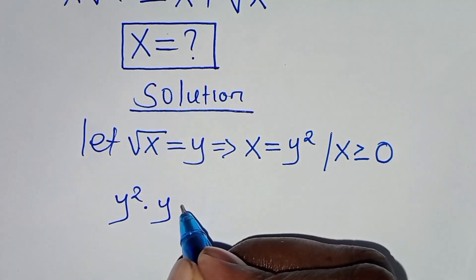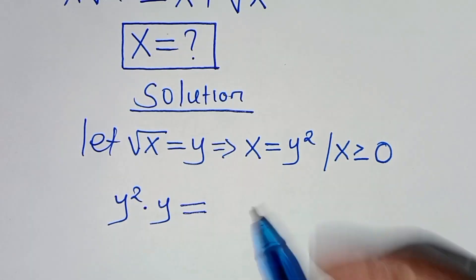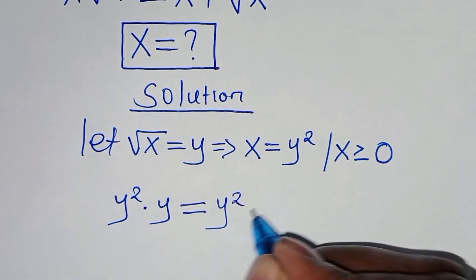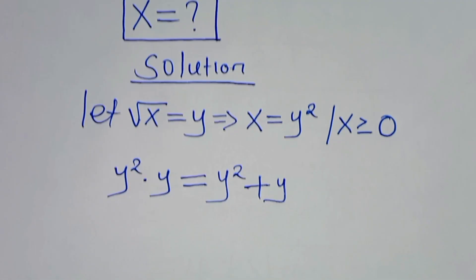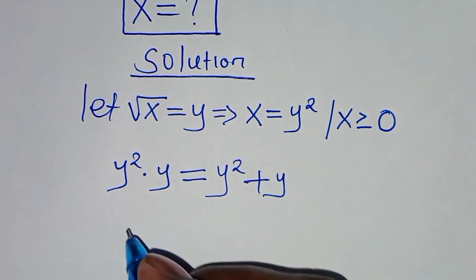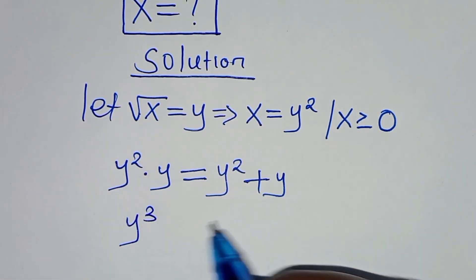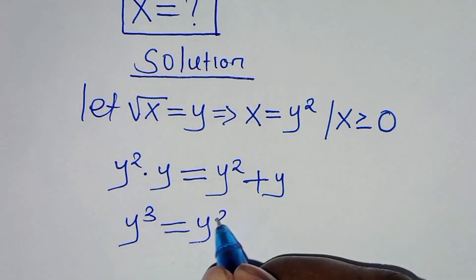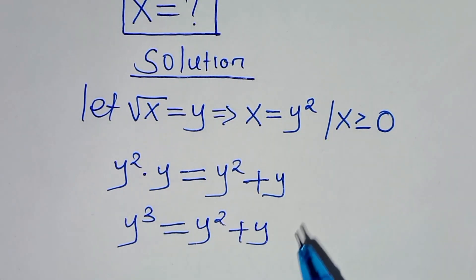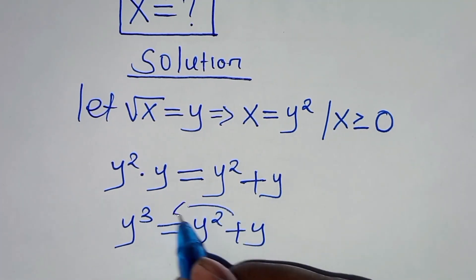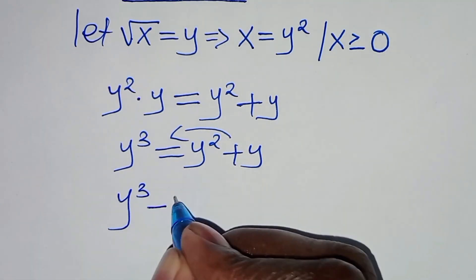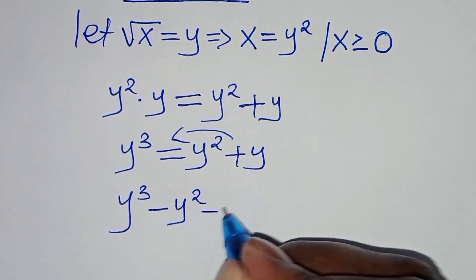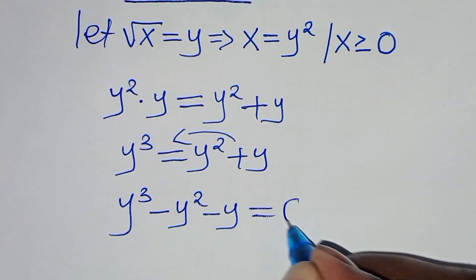This is equal to x, which is y squared, then plus square root of x, which is y. So y squared times y is y to the power 3. This is equal to y squared plus y. So let's take y squared plus y to the left side, so that now we have y to the power 3 subtract y squared minus y.